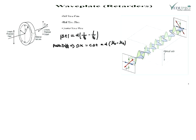When a plane polarized beam is incident normally on a double refracting crystal plate, its vibration breaks into two components. As we have studied, when plane polarized light enters a double refracting crystal — such as calcite — it splits into two components: one vibration along the optic axis, and the other vibration perpendicular to it. These components travel through the plate in the same direction but with different velocities, v₀ and vₑ.